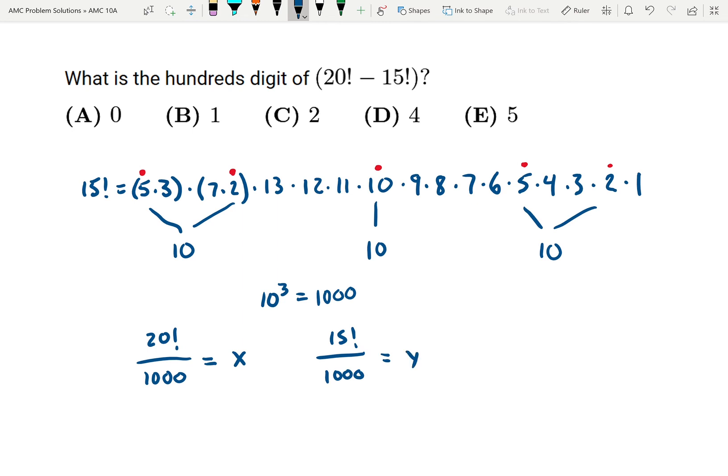Now going back to the beginning problem, if I do 20 factorial minus 15 factorial divided by a thousand, that's going to give me x minus y.